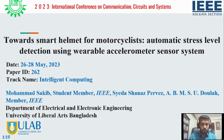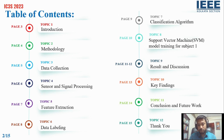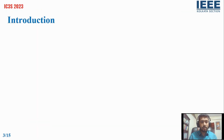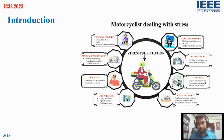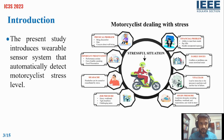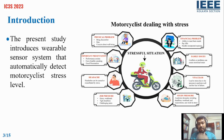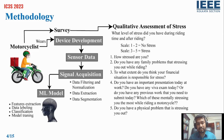This is the contents we will cover in this presentation. In the modern world, stress is a common occurrence that alters how people behave and how they physically react in a certain situation. As we can see from the infographics, a motorcyclist can be under stress due to various reasons. We have come up with the idea from some literature review. We have used a single accelerometer sensor and machine learning that will automatically detect motorcycle stress level.